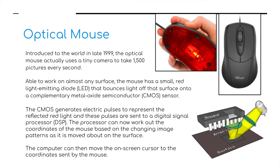Moving on to optical mice. Back in the day, mice had a trackball or wheel inside that rolled around on a surface, controlling the X and Y axis to move the cursor on screen. That technology is about 30 years old now. The optical mouse doesn't use a trackball — instead it uses tiny cameras to take 1,500 pictures every second, and it's able to work on almost any surface, ideally black or white flat surfaces.